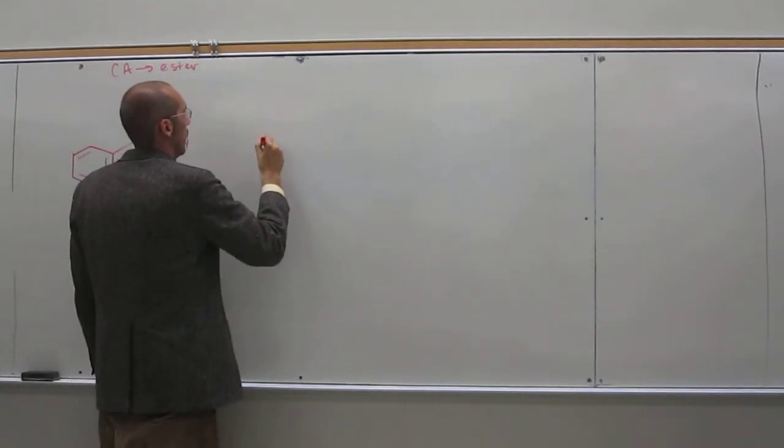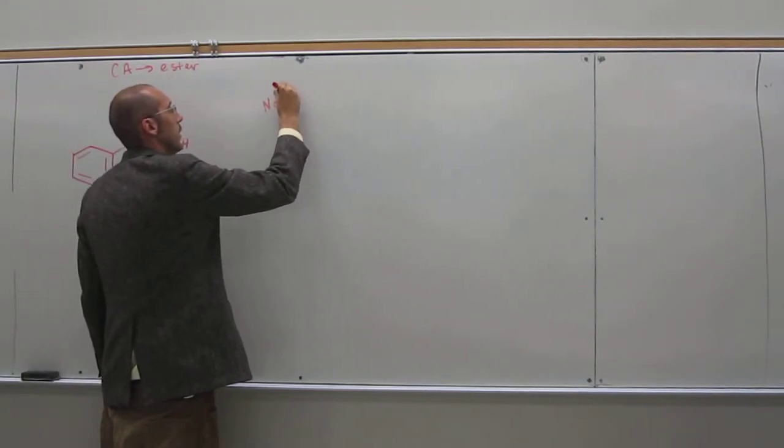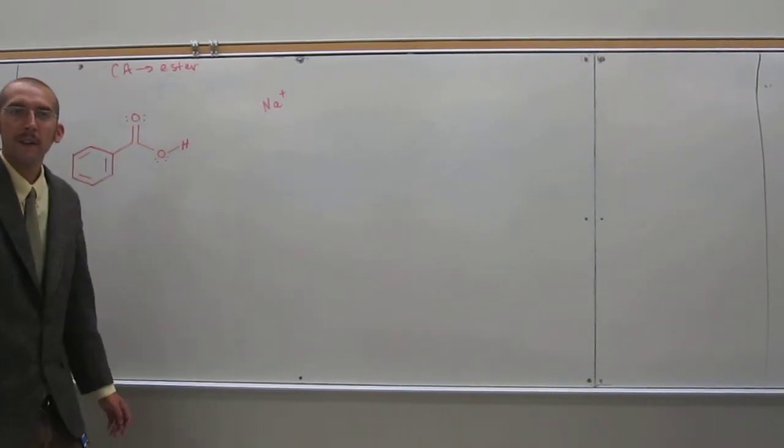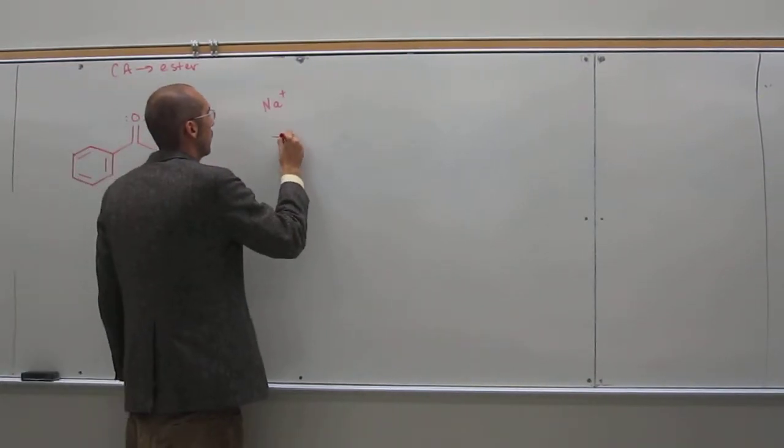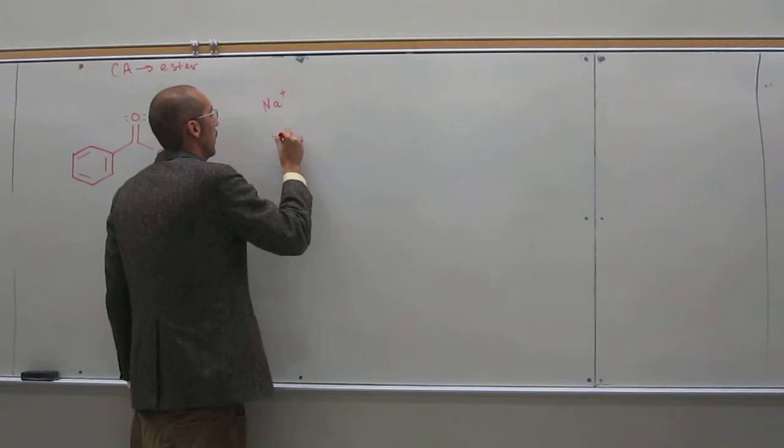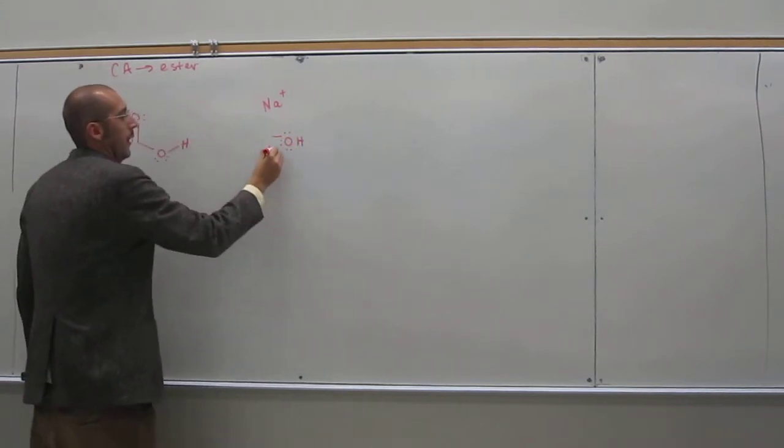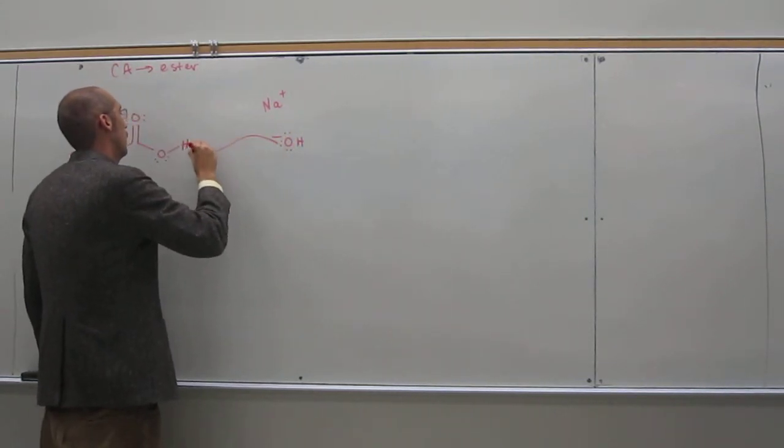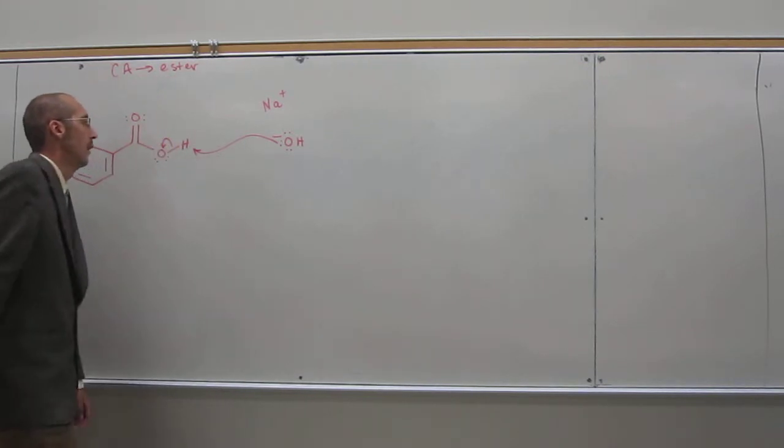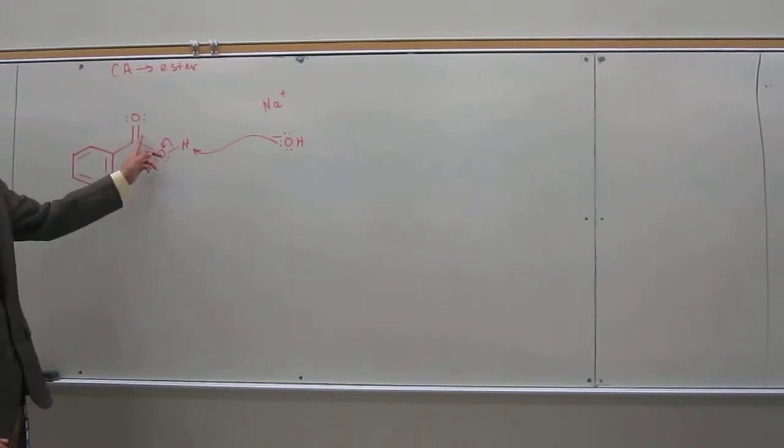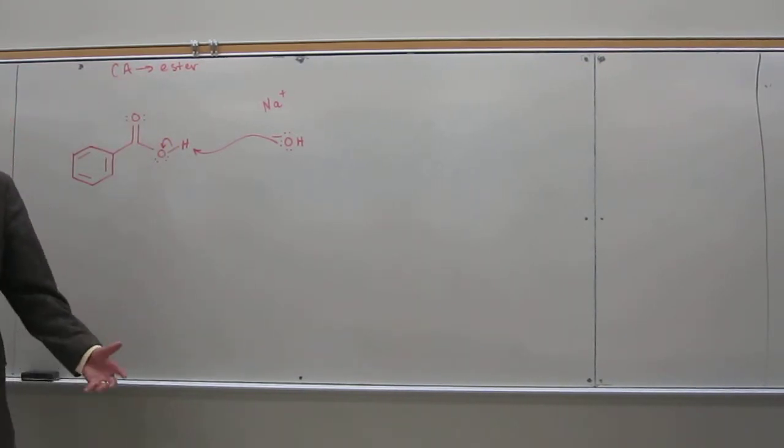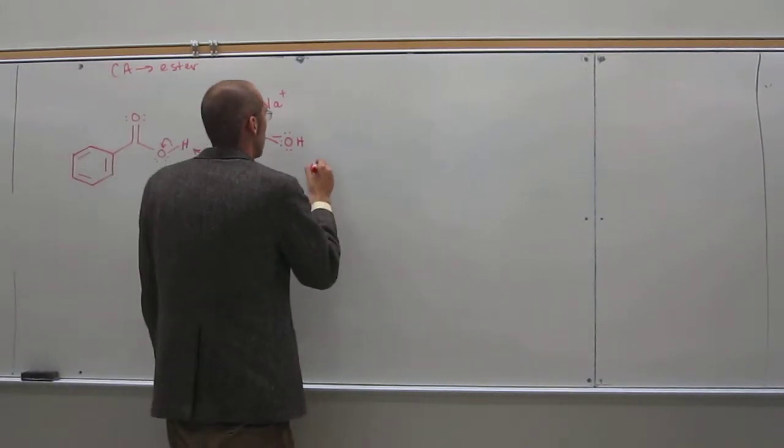So first step, sodium hydroxide. Sodium, of course, is the spectator ion, ain't doing anything. OH minus. That's going to deprotonate your carboxylic acid. If you wanted to push those arrows up there, that'd be fine too. The resonance structures of each other.